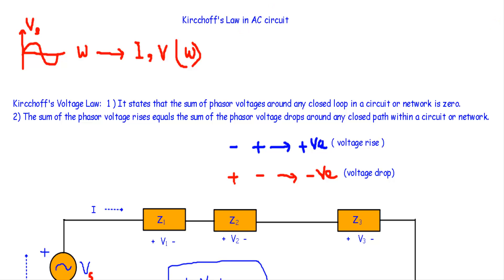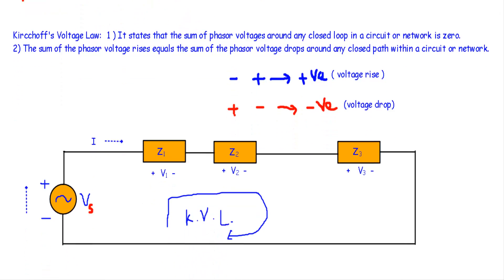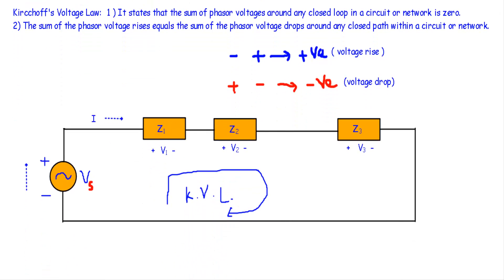Now let me show you Kirchhoff's voltage law in the case of an AC circuit. We can state the KVL using two statements. The first one is that Kirchhoff's voltage law states that the sum of phasor voltages around any closed loop in a circuit or network is zero.